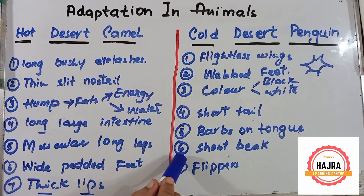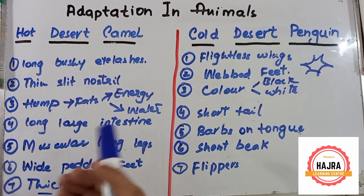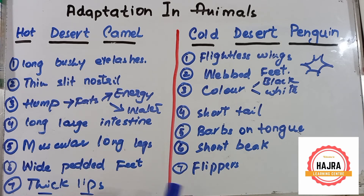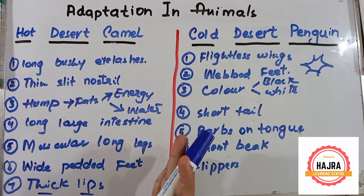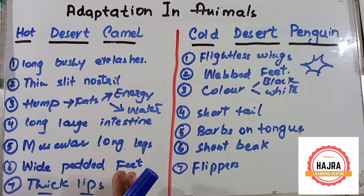Number six point: they have a short beak for catching fish. Number seven point: they have flippers, and they pull the flippers to the back side to make the body streamlined while swimming or diving at depth. This is the function of the flipper.